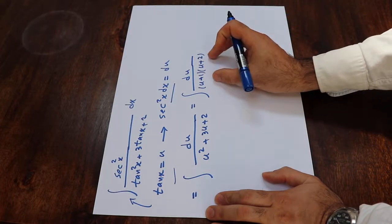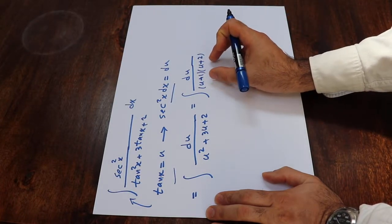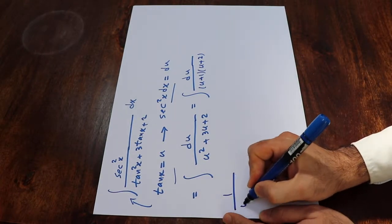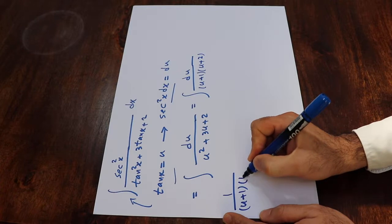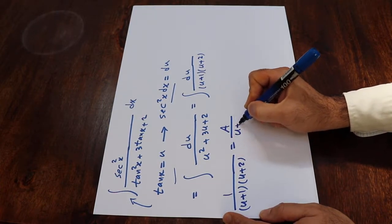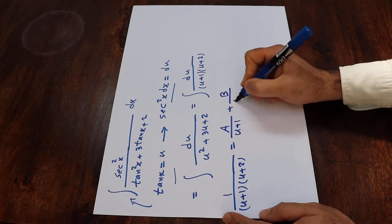you need to first express this as the sum of the partial fractions. So to do that, you have to write here 1 divided by u plus 1 times u plus 2 is equal to a divided by u plus 1 plus b divided by u plus 2.